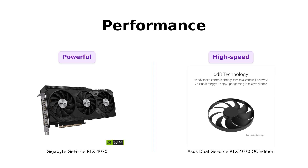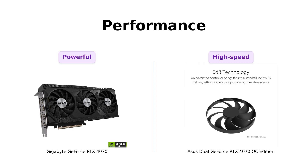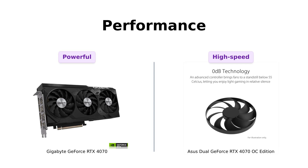Moving on to clock speeds, the Asus Dual GeForce RTX 4070 OC Edition has an advantage. In OC mode, it reaches an impressive 2,505 MHz, while the Gigabyte GeForce RTX 4070 operates at a default mode of 2,475 MHz. This slight difference may result in a marginal performance variation in certain scenarios.